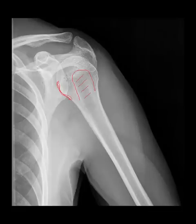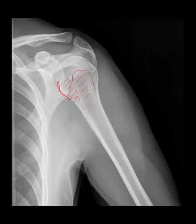The intertubercular groove will be in this location on the internal rotation view as well. This is where the long head of the biceps tendon passes before it inserts into the shoulder. The bicipital tendon can become dislocated, though radiographically you can't see that. The bicipital groove, also known as the intertubercular groove, is the region where that tendon lives normally.